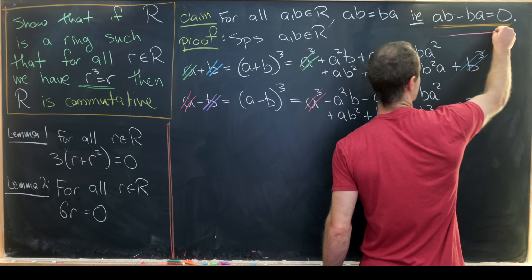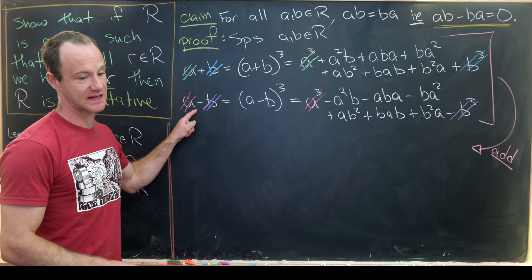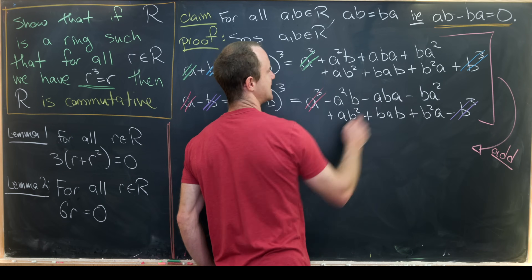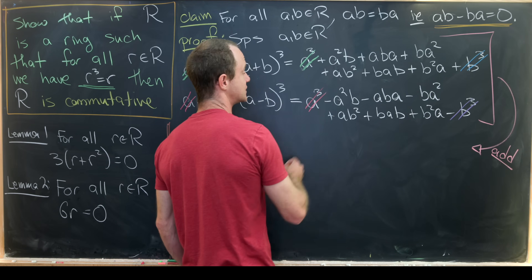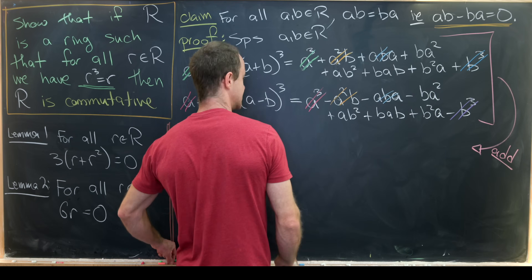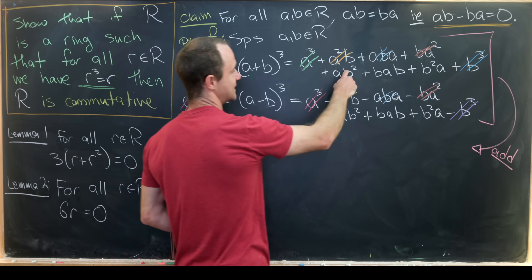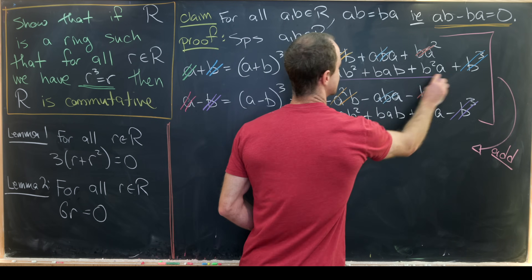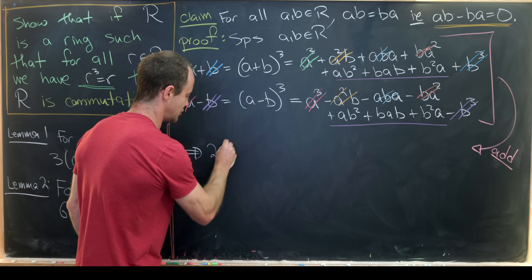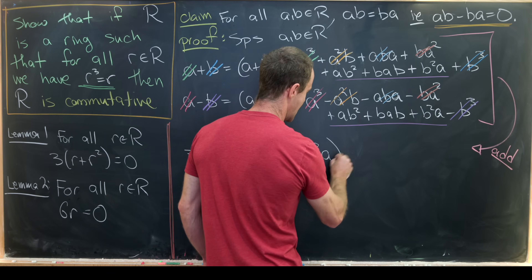After cancellations, the left-hand side gives zero on both sides. On the right-hand side, the terms with minus signs cancel against matching plus-sign terms. The two surviving trinomials are exactly the same, so adding gives us: two times the quantity (AB² + BAB + B²A) equals zero.